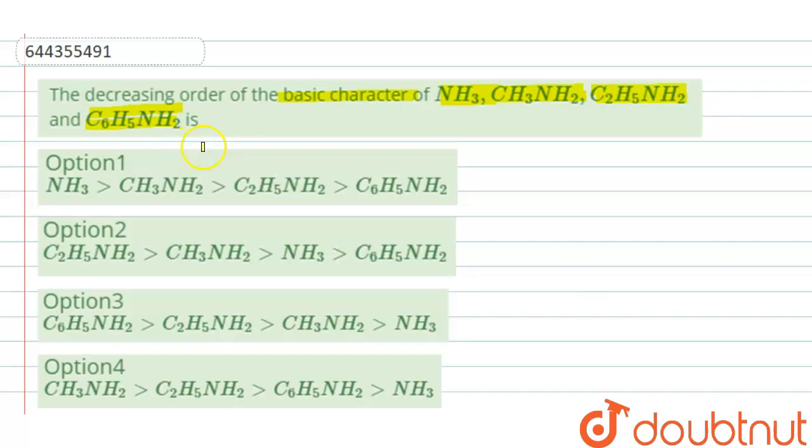which is aniline. And these are the options. So ammonia and methylamine which is CH3NH2 and C2H5NH2, we can write it as CH3CH2NH2, and there is aniline.